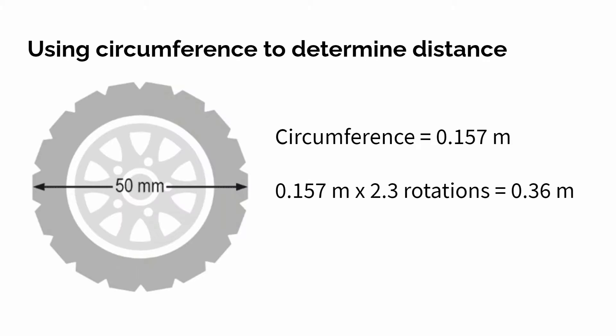Now we have the circumference of a tire. How does that calculate to distance? Well here's the formula for that. Say I know that the circumference of my tire wheel is 0.157 meters. If I want to know how far that vehicle has gone, if it's gone 2.3 rotations, that's saying that the car has traveled 0.36 meters.